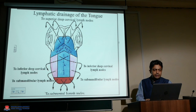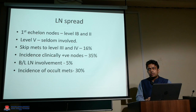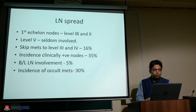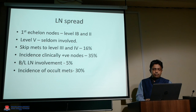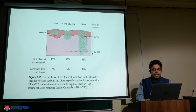This diagram shows the lymphatic drainage and crisscross drainage of lymphatics in the tongue. The most common first echelon lymph nodes are at levels 1B and 2; level 5 is rarely involved. However, level 4 is also addressed due to risk of skip metastasis, which occurs in up to 16% of cases. Incidentally detected positive nodes are around 35%, bilateral neck involvement in about 5%, and occult metastasis in around 30%.